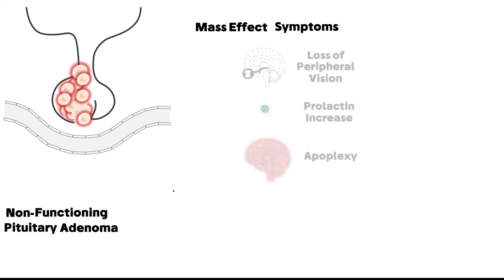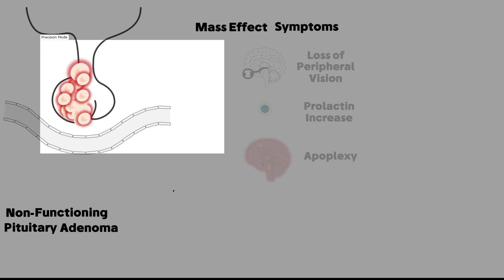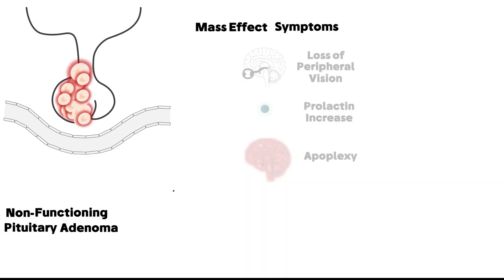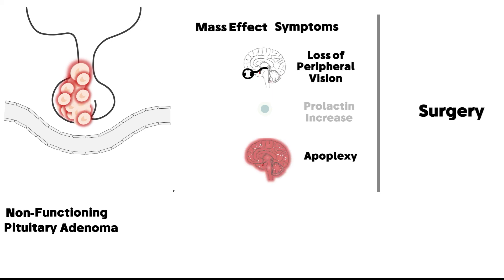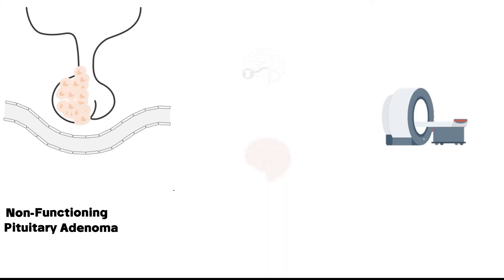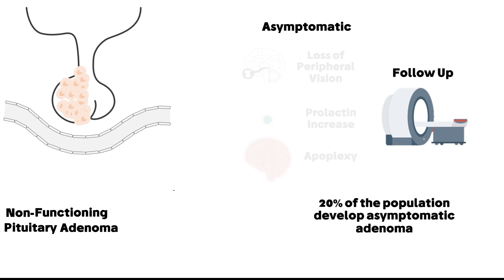The third mass effect is hemorrhage of the pituitary gland tumor, technically called apoplexy. Both apoplexy and loss of peripheral vision are considered emergencies that need surgery. Most non-functioning pituitary adenomas are asymptomatic; in this case, no surgical intervention is needed and only regular follow-up is required. Studies show 20 percent of the population develop a type of asymptomatic adenoma during their lives.